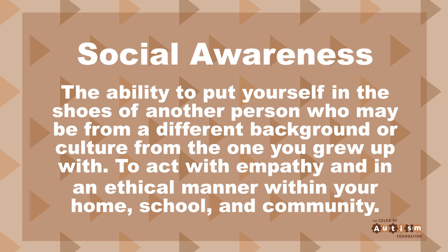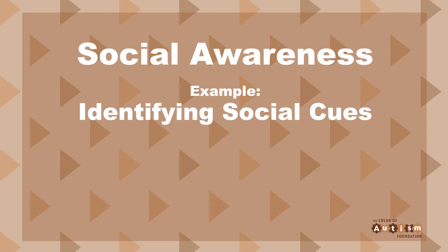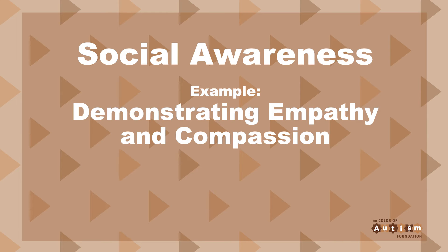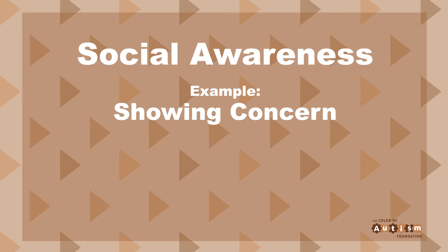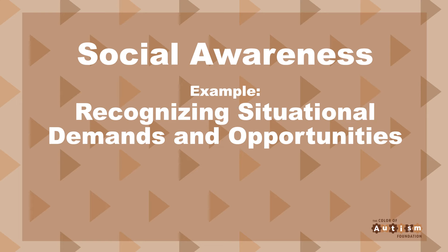Now we have social awareness. Social awareness is the ability to put yourself in the shoes of another person who may be from a different background or culture from the one you grew up in — to act with empathy and in an ethical manner within your home, school, and community. Autistic children may need a little more support with developing social awareness. Examples of social awareness include: identifying social cues, whether verbal or physical, to determine how others feel; demonstrating empathy and compassion; showing concern for the feelings of others; understanding and expressing gratitude; and recognizing situational demands and opportunities.